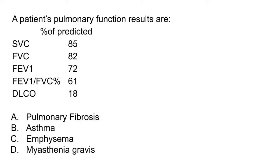So what condition would this show? The first thing that we always want to look at when analyzing pulmonary function results is their FEV1-FVC ratio. If it is under 70, that means the patient has an obstructive disorder.